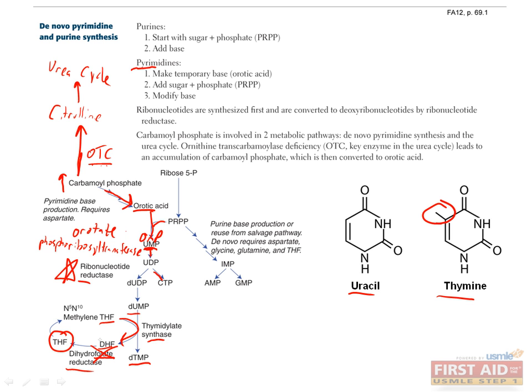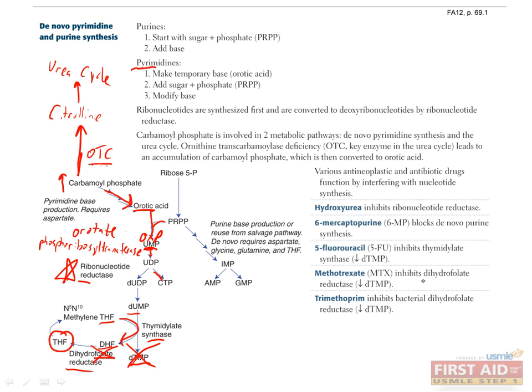Since folate is a key part of tetrahydrofolate, patients who have a deficiency in folate have defects in nucleotide synthesis, which in adults can cause anemia and can also cause neural tube defects in developing fetuses. Dihydrofolate reductase is also targeted by some cancer therapies, such as methotrexate, since cancer cells need to make nucleotides to divide, and also by trimethoprim, which specifically targets a bacterial version of the enzyme to prevent cell division in bacteria.